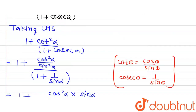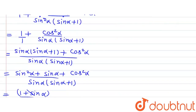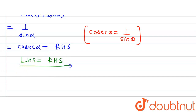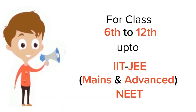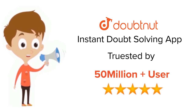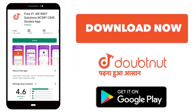Now, 1 divided by sinα can be written as cosecα, which is the right hand side of the equation. We have proven that the left hand side equals the right hand side, and that is what we were supposed to prove. For class 6 to 12, IIT JEE and NEET level, trusted by more than 5 crore students — download DoubtNet app today.